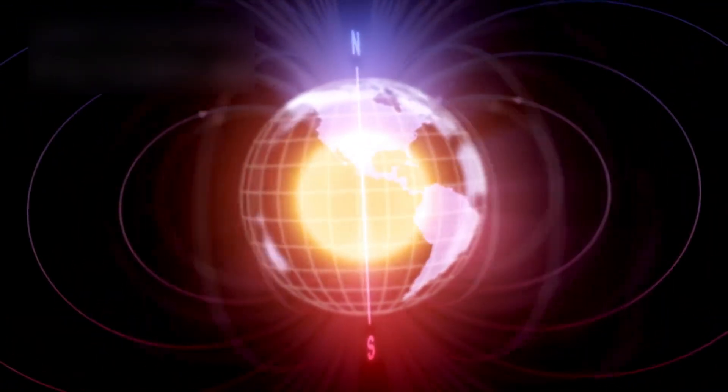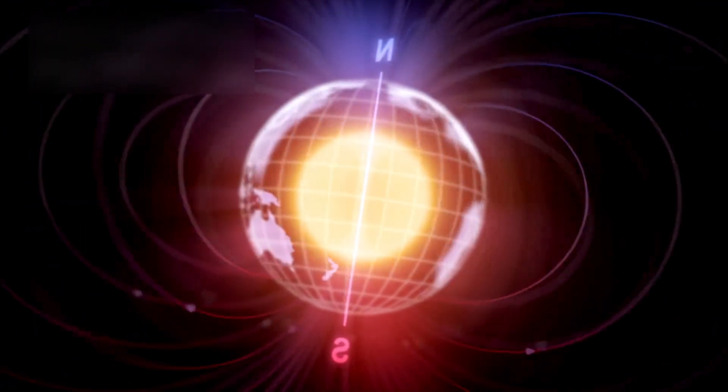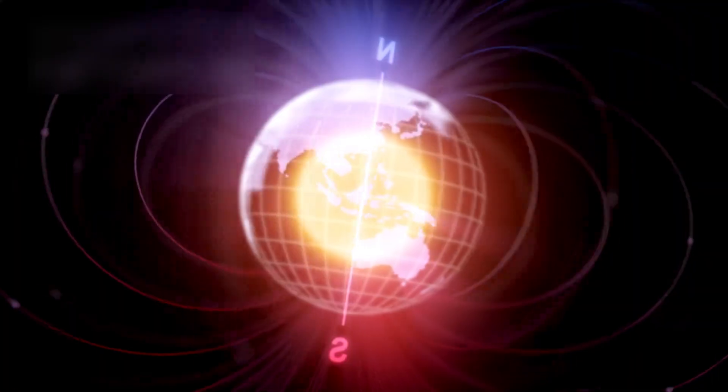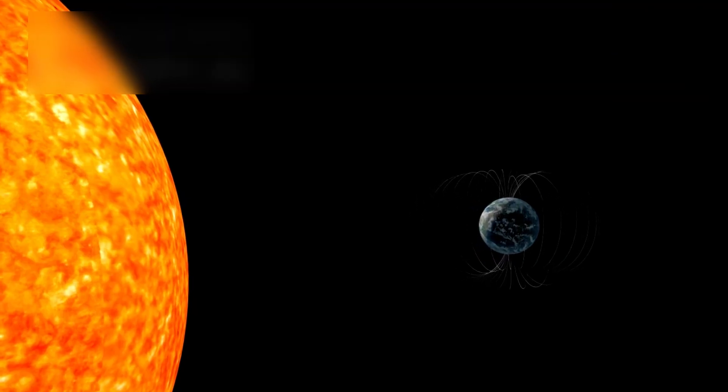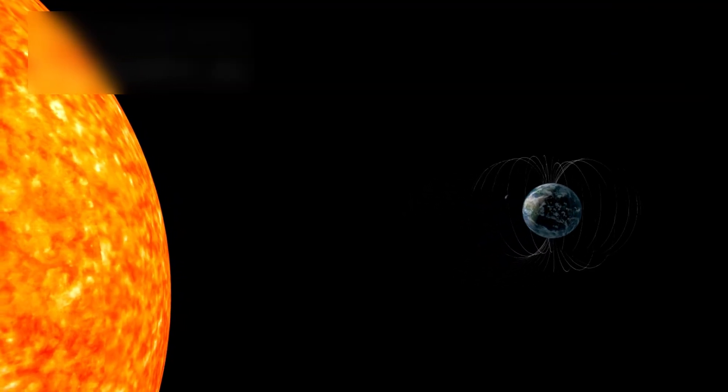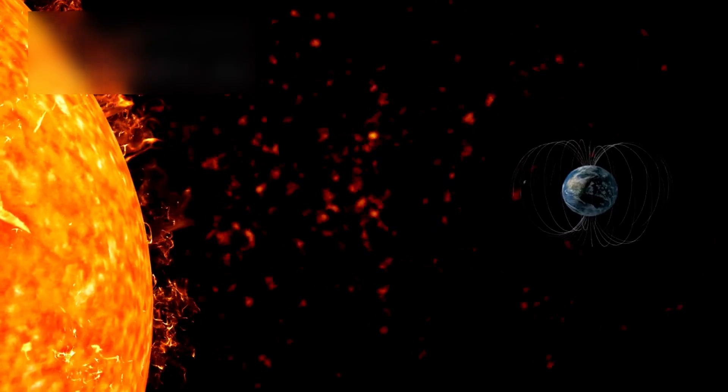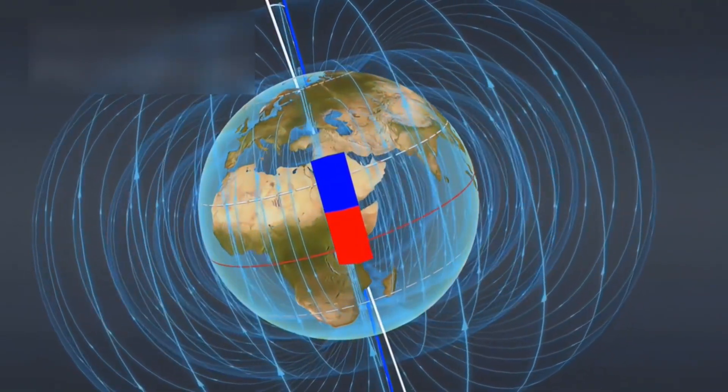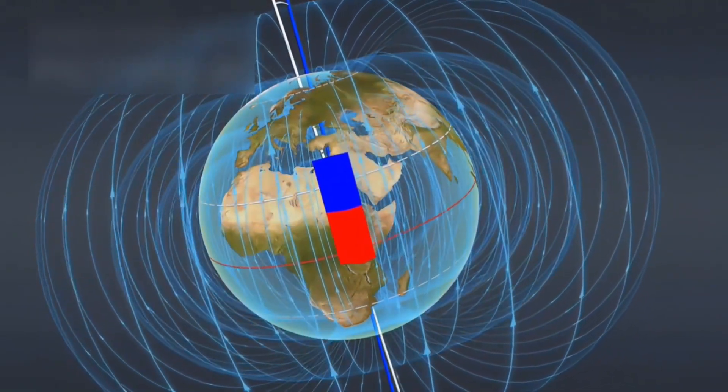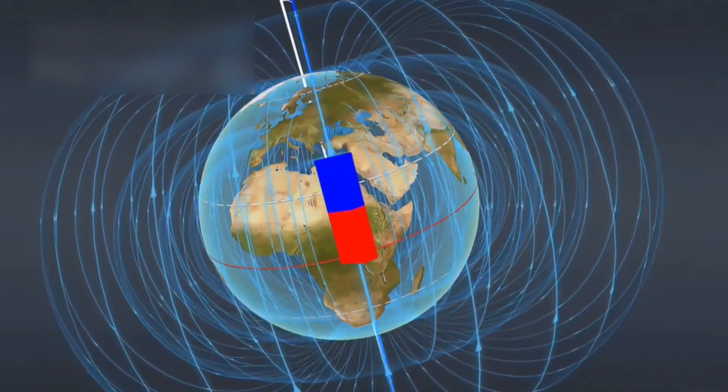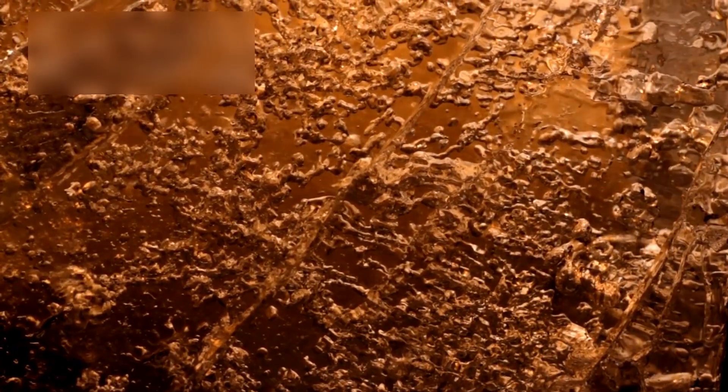On Earth, our magnetic field protects us from dangerous radiation and helps keep our atmosphere stable. If Pluto has something similar, it could shield its ocean and atmosphere from space hazards. This magnetic shield might explain the unusual heat signatures and active geology on Pluto's surface. It could also teach us how distant icy worlds remain active in harsh environments.